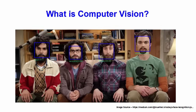Computer vision is the way of teaching intelligence to machines and making them see things just like humans. So what happens when a human sees an image? He will be able to recognize the faces which are there inside the images. In its simplest form, computer vision is what allows computers to see and process visual data just like humans.